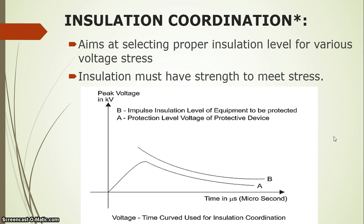The switching impulse has a wave shape of 250/2500 microseconds. Here, A is the protection level voltage of the protective device and B is the impulse insulation level of the equipment to be protected. To protect a device with protection level voltage A, the insulation level must have a much higher value to withstand against that protection level voltage.